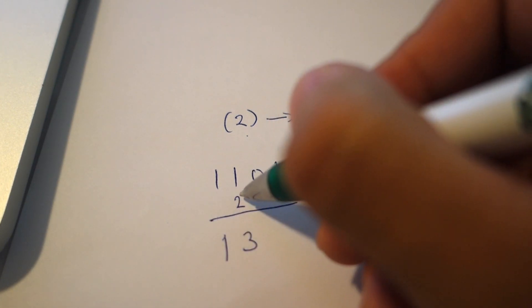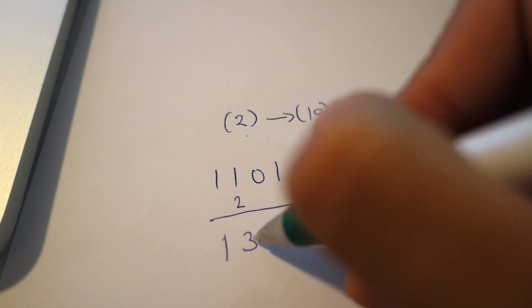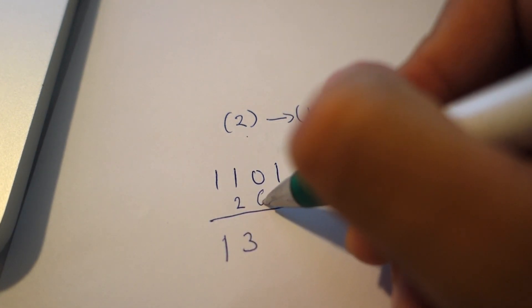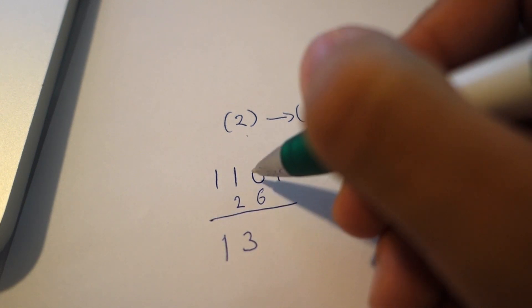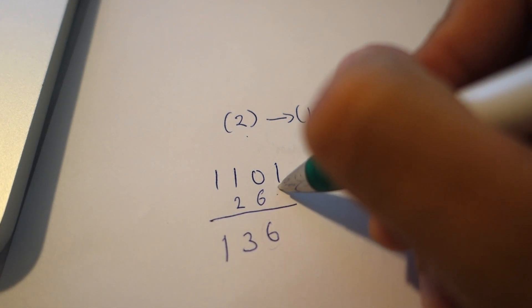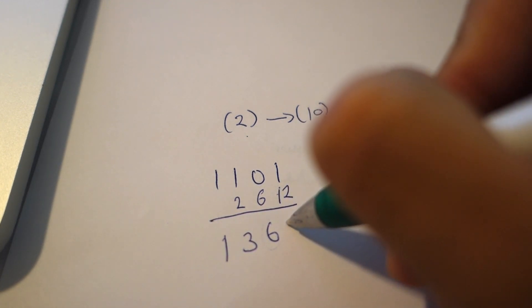We take this number now and we multiply it by 2, it's 6, we add. We take this number, we multiply it by 2, it's 12, we add 1.